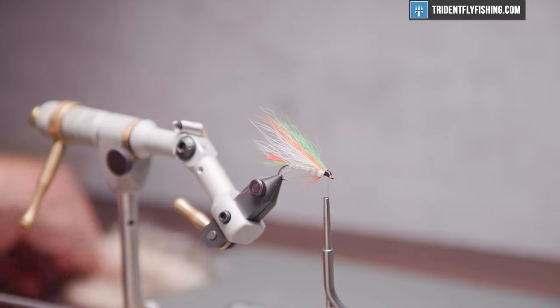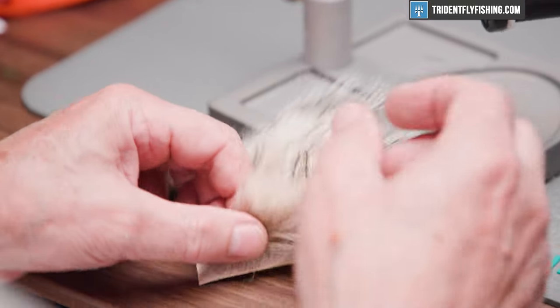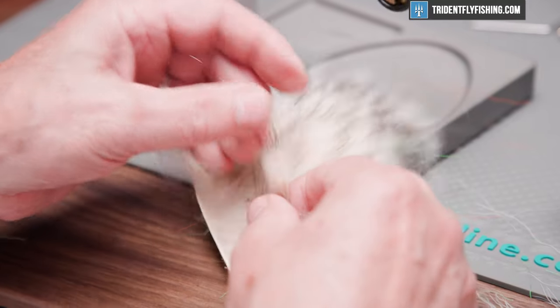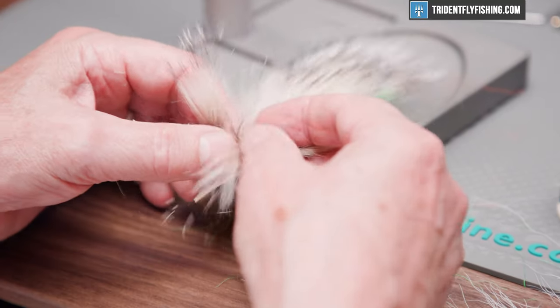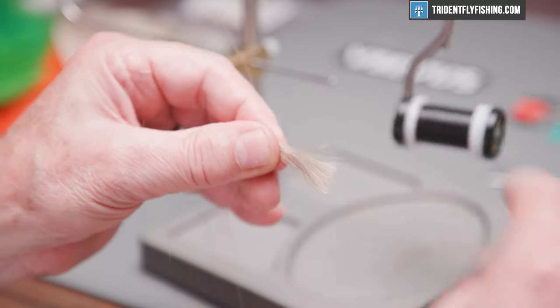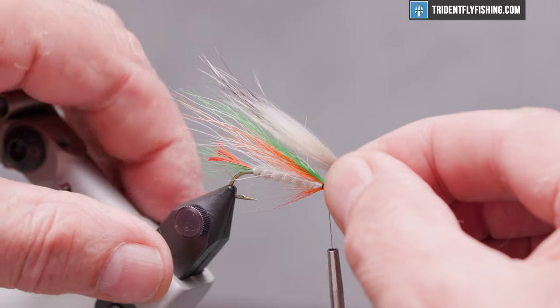And our last material is going to be badger fur. We're looking for the long guard hairs here. It also has some significant under fur. We're going to strip most of that out. Put that right on top.